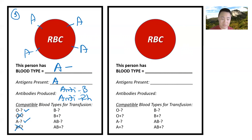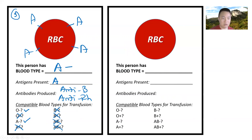B negative? It doesn't like B — this is out. B positive? It doesn't like B and doesn't like RH — no good. The next two have the letter B in them, so clearly no good. The only blood types compatible for blood type A negative are O negative and A negative.